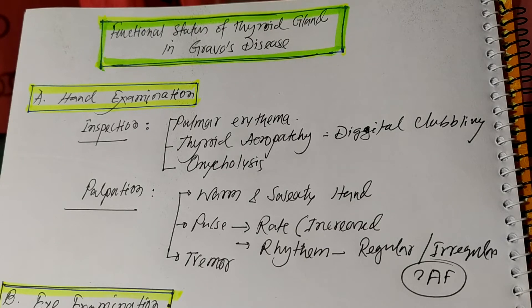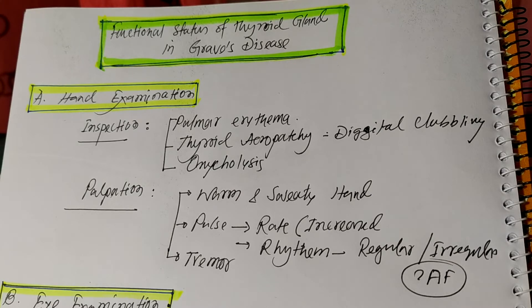Suppose you have a patient with diffuse thyroid gland enlargement. The thyroid gland is diffuse and enlarged, firm in consistency, non-tender, free from underlying and overlying structures, and most importantly, a bruit is present in the enlarged thyroid gland. With this finding, Graves' disease is very likely.